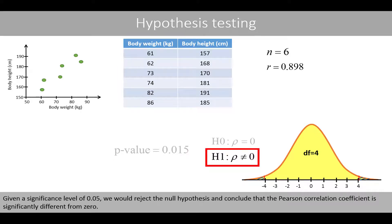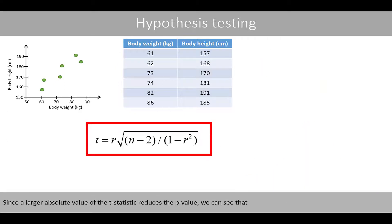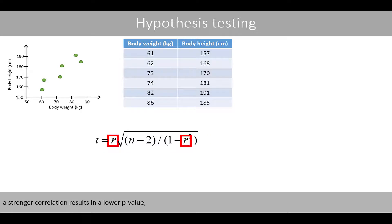Given a significance level of 0.05, we would reject the null hypothesis and conclude that the Pearson correlation coefficient is significantly different from 0. Since we know that the correlation coefficient is positive, we can further conclude that there is a significant positive correlation between body height and body weight. Since a larger absolute value of the t-statistic reduces the p-value, a stronger correlation results in a lower p-value, and a larger sample size also reduces the p-value.